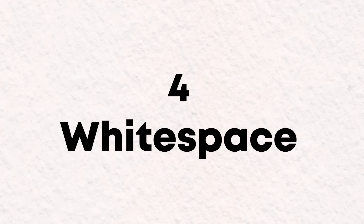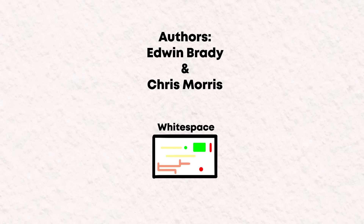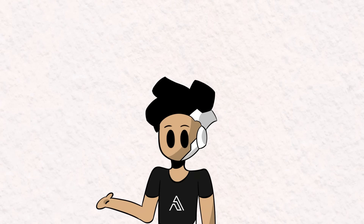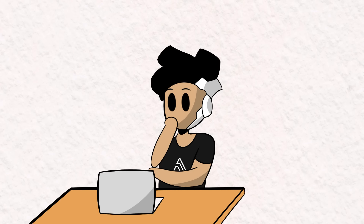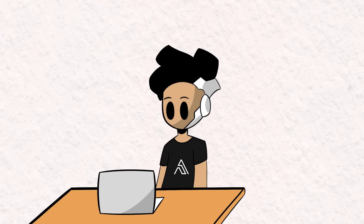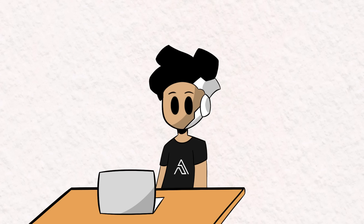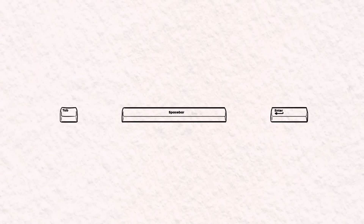Up next at number four, we have Whitespace. This esolang was created by Edwin Brady and Chris Morris. Before I talk about it, I want to show you right away what a program in this language looks like. What you're looking at is actually a Hello World program made entirely out of whitespace characters. While the majority of programming languages ignore or assign little meaning to most whitespace characters, in this language only whitespaces have meaning. Therefore, the source code of programs written in Whitespace is invisible. If I highlight what's in this document, you'll notice that the highlighting looks like lines of code — but they're actually whitespaces generated with tabs, spaces, and line feeds, or newline characters.